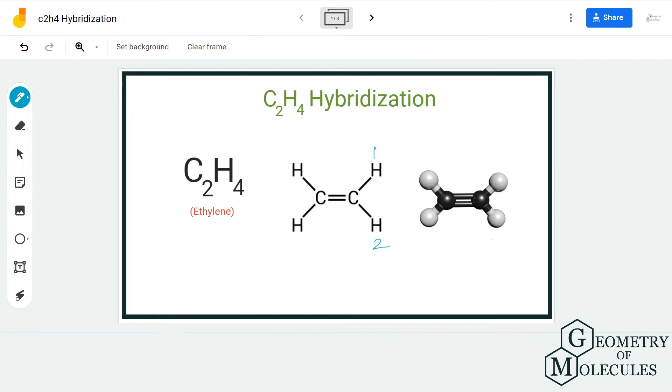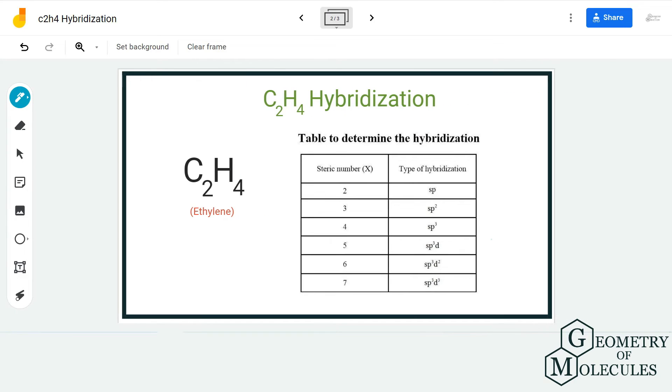It is forming three sigma bonds and there are three electron regions around this particular carbon atom—one, two, and three. For steric number, we only consider sigma bonds or we look at the total number of electron regions around the given atom. The steric number is three for this carbon atom.